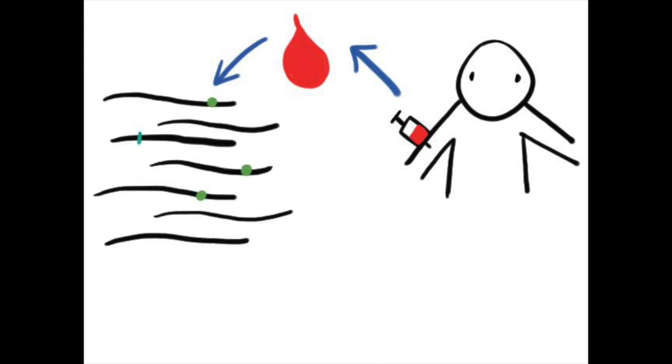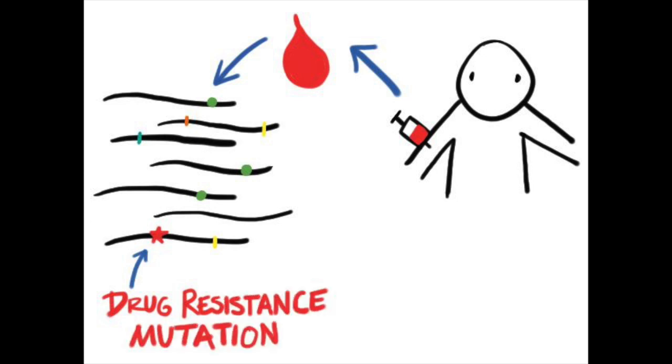When we sample HIV from a patient, we normally take samples from the blood plasma. This is relatively easy to do, and it allows us to see the type of variation in the viral population and check if there are any pre-existing drug resistance mutations that might interfere with treatment.